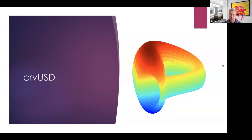We start with CRV USD, which is a Curve stablecoin. It's not yet issued — the white paper was released to the general public just last year, with a few months of active work. Some contracts are now deployed and tested, and in a short while it will be presented to the market. We'll look at the design because it brings really interesting innovation.